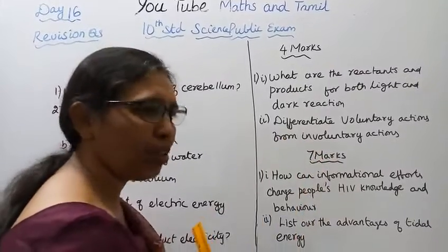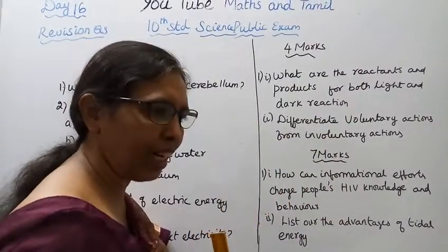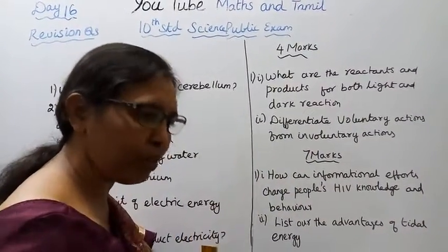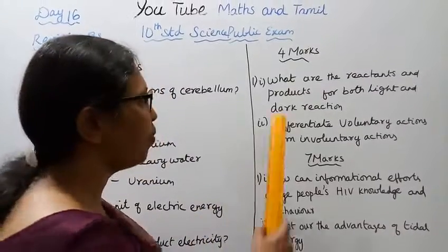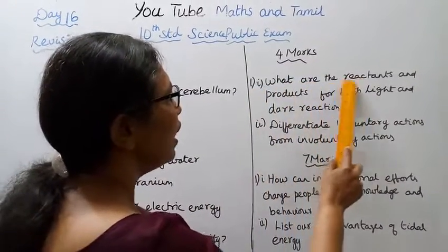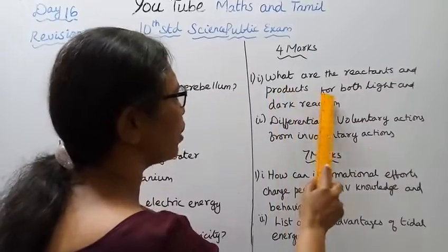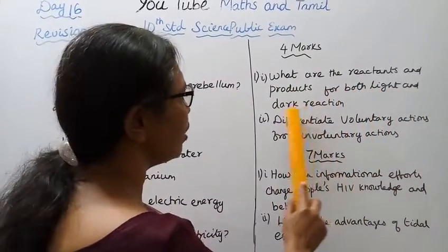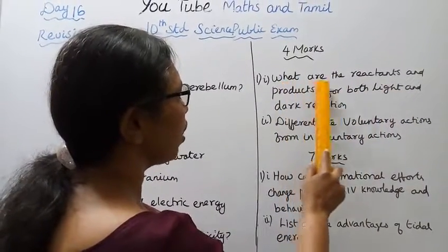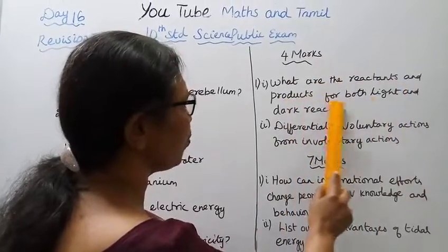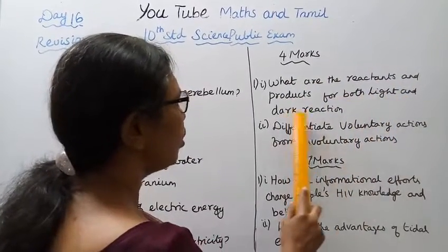The 7 marks, you have to write forever in detail. There will be 2 subdivisions or 3 subdivisions. First one: What are the reactants and products for both light and dark reaction?